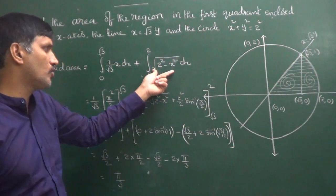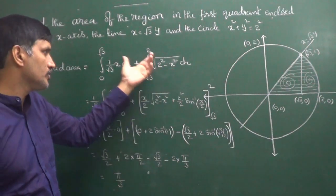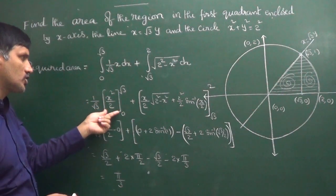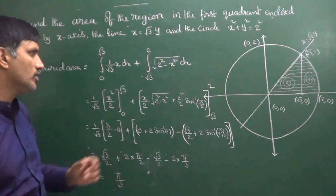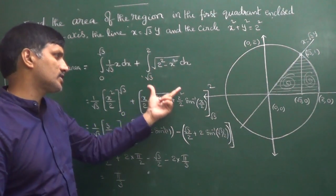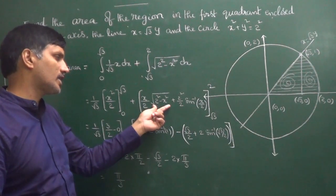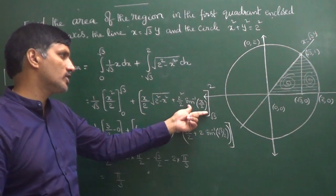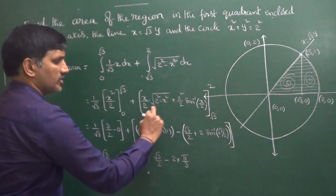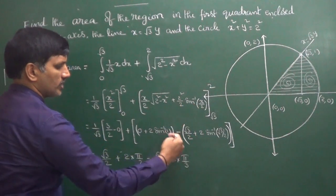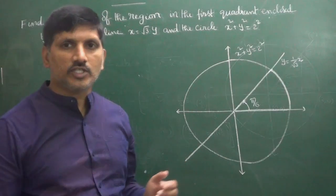The circle equation gives y = √(4 − x²). Integrating the line part gives x²/2 (upper minus lower limit). For the circle part, the formula for ∫√(a² − x²) dx = (x/2)√(a² − x²) + (a²/2)·sin⁻¹(x/a). Applying the limits and simplifying, we get the answer as π/3.